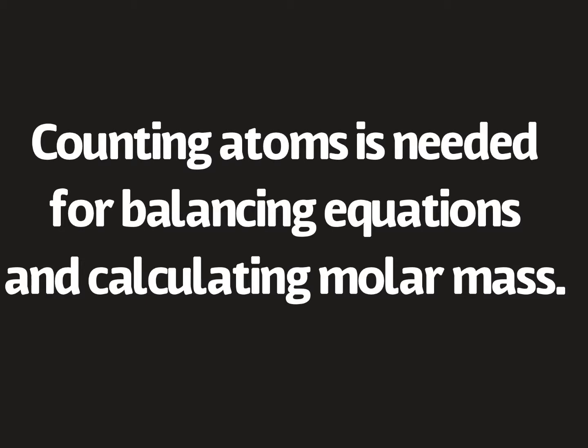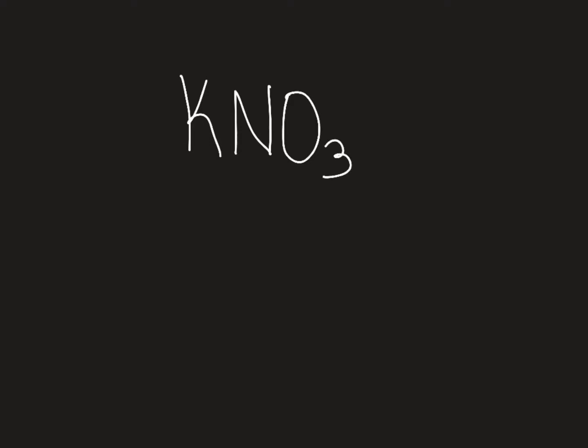Let's look at this formula right here — we have potassium nitrate. In a chemical formula, you have the symbols of an element and then we have subscripts. Three is a subscript. We do not write ones in chemical formulas; those are understood to be there. I like to list the atoms according to their symbol, so I have potassium, nitrogen, and oxygen.